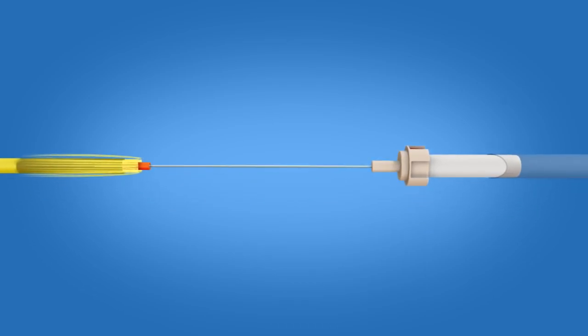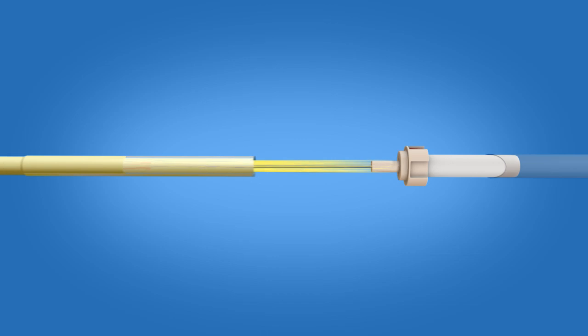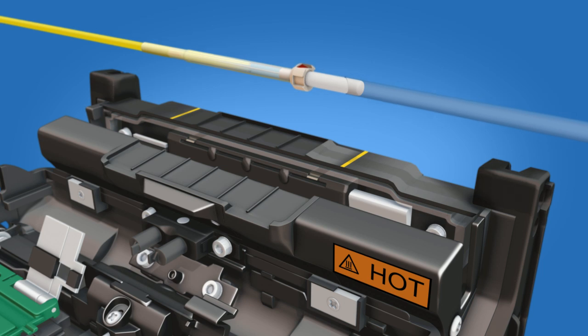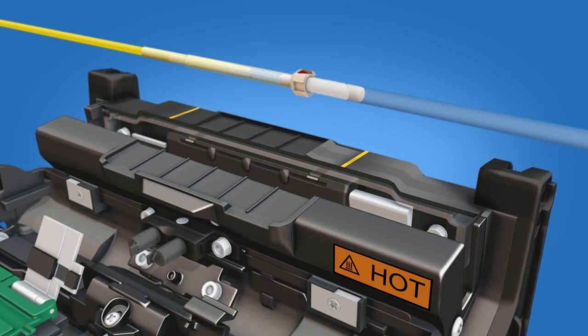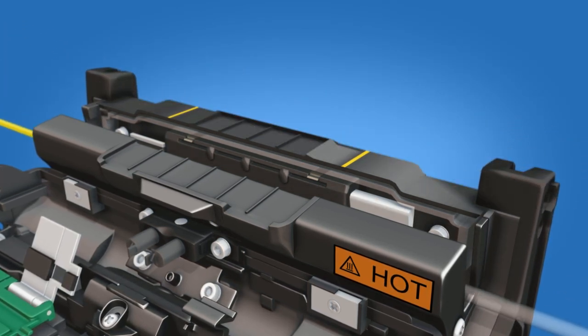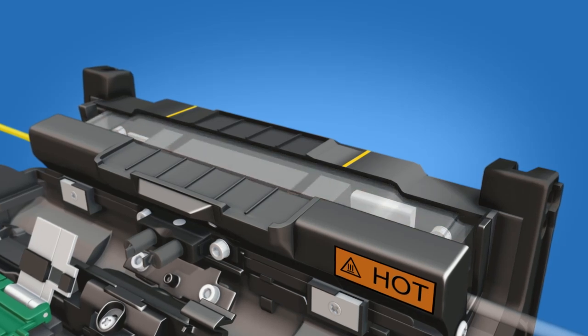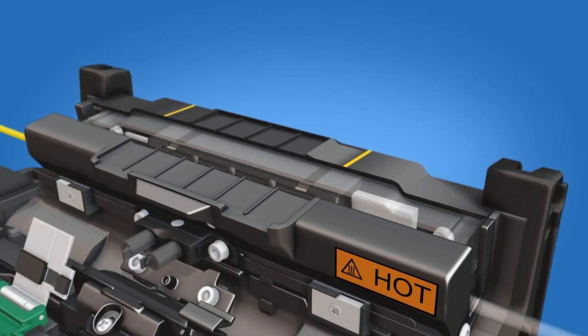Slide the protective sleeve over the splice so that it is flush with the ferrule unit. Position the sleeve in the center of the heater while continuing to maintain contact with the ferrule. Heat the protective sleeve. Allow the sleeve to cool before removing it from the heater.